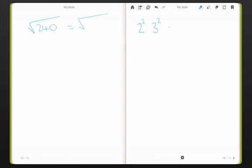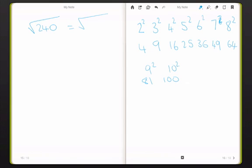2 squared, 3 squared, 4 squared, 5 squared, 6 squared, 7 squared, 8 squared, et cetera. So 2 squared is 4, 9, 16, 25, 36, 49, 64. If you kept going 81, 100, that's 9 squared, 10 squared, keep going as much as you like.